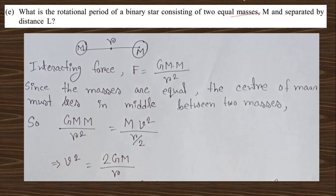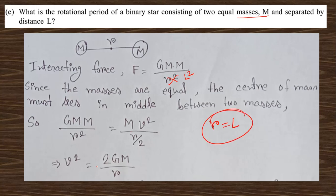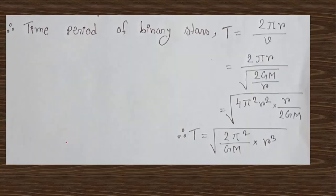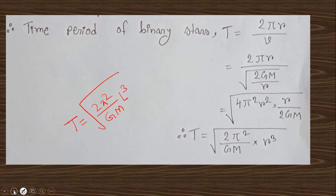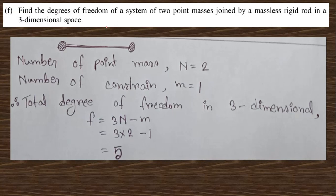Question 1e: Find the rotational period of a binary star system consisting of two equal masses m separated by total distance L. Setting up the equation v² = 2Gm/r with r = L, the time period comes out to T = 2π√(L³/Gm), which is the time period of the binary star.